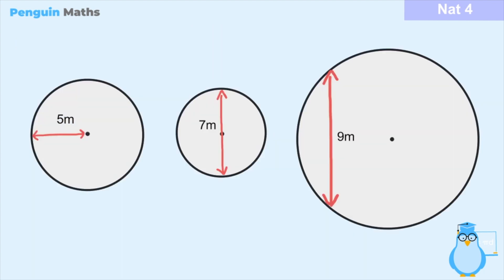Here we have three examples with several lines passing through each circle. The first shows a distance of 5 meters from the centre point to the edge, so this circle has a radius of 5 meters. For the second, the line passes through the centre point and connects one side to the other, making it a diameter — so this circle has a diameter of 7 meters. For the last one, the distance is 9 meters but the line does not pass through the centre point, so it cannot be described as a radius or a diameter — it is neither.